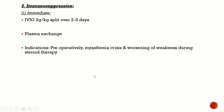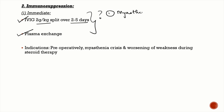Immediate immunotherapy includes intravenous immunoglobulin (IVIG) at 2 g/kg split over two to five days, and plasma exchange. These are used during myasthenic crisis, preoperatively, and when initiating high-dose steroid therapy (to counteract the initial worsening of weakness that steroids can cause).